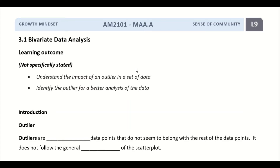Hi everyone, welcome to the 9th lesson for Topic 3.1 Bivariate Data Analysis. This is going to be our last lesson for this topic. It's going to be a very short one because I just want to explain something which is called an outlier.